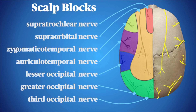Scalp block targets the following nerves: the supraorbital and supratrochlear nerves, the zygomaticotemporal nerve, the auriculotemporal nerve, the greater occipital, and the lesser occipital nerves.